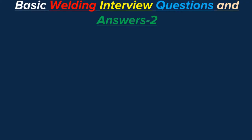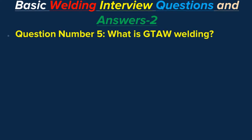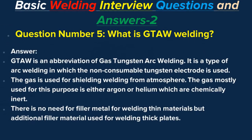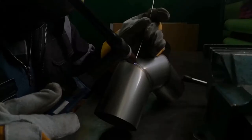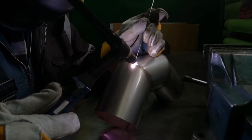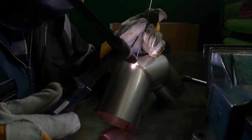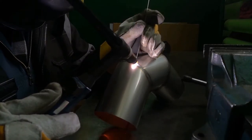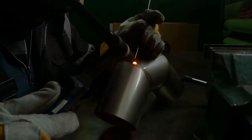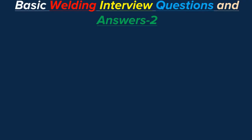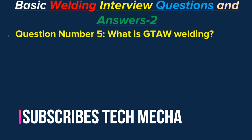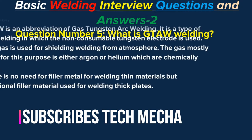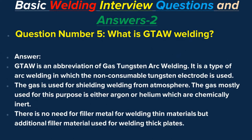Question number five: What is GTAW welding? Answer: GTAW is an abbreviation for gas tungsten arc welding. It is a type of arc welding in which a non-consumable tungsten electrode is used. Gas is used for shielding the weld from the atmosphere, mostly argon or helium, which are chemically inert. No filler metal is needed for thin materials, but additional filler material is used for thick plates.